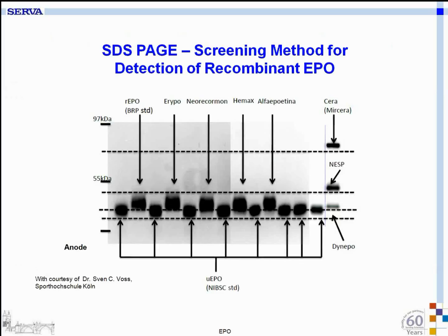Here is a picture of an SDS-PAGE done by Dr. Sven Voss from the Sports University in Cologne, Germany. It shows the different running distances of the different EPO products in comparison to the unmodified, original human EPO. This picture shows that with SDS-PAGE technology you can separate and discriminate between natural and recombinant EPO products.